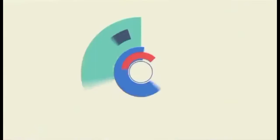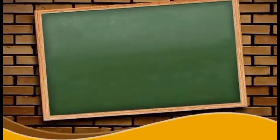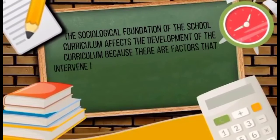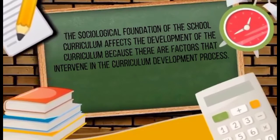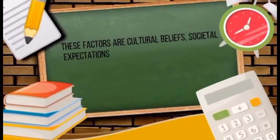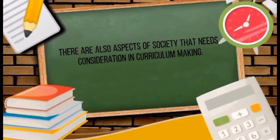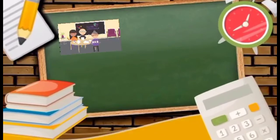That concludes the historical foundations of the curriculum. Next is the sociological foundations of the curriculum. The sociological foundation of the school curriculum affects curriculum development in the sense that certain factors intervene in the curriculum development process due to cultural beliefs, societal expectations, values, norms, and traditions from the background of stakeholders. There are many aspects of society that need consideration in curriculum making: changes occurring in societal structures, transmission of cultures, social problems as issues for curriculum, and economic issues.